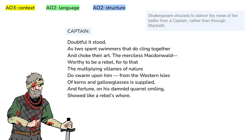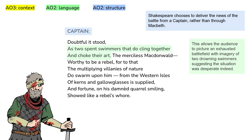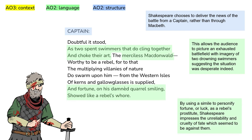In terms of structure, Shakespeare chooses to deliver the news of the battle from a captain, rather than through Macbeth himself. This allows the audience to understand how greatly Macbeth is esteemed by both the king and others, and provides an honourable contrast to his negative association with the witches we saw in Act 1, Scene 1. The captain suggests the outcome was in doubt in the simile, 'as two spent swimmers that do cling together and choke their art,' allowing the audience to picture an exhausted battlefield. Furthermore, the description of the merciless McDonwald, on whom fortune showed like a rebel's whore, expresses the depth of villainy of Macbeth's opponent. By using a simile to personify fortune as a rebel's prostitute, Shakespeare impresses the unreliability and cruelty of fate, which seemed to be against them.